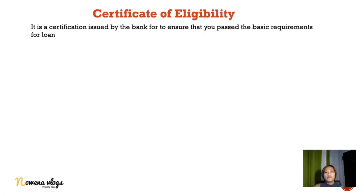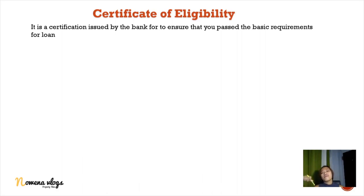Certificate of eligibility is a certification issued by the bank to ensure that you pass the basic performance requirements for a loan. Some developers require a certificate of eligibility to ensure that the buyer or investor is eligible to take a loan from the bank. However, not all developers or companies require this.